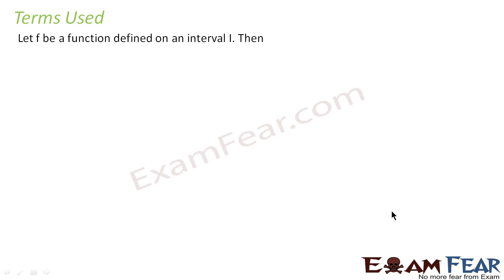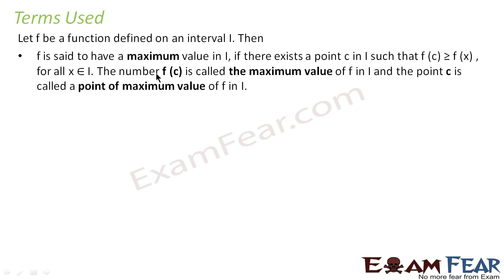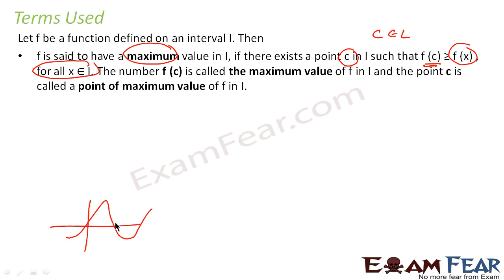Let's understand the terms used before we go to the topic. If f is a function on interval I, then f is said to have a maximum value if there exists a point c in I such that f(c) is greater than or equal to f(x) for all x in I. Then f(c) is called the maximum value and c is called the point of maximum value. For example, on a graph, c is the x-coordinate and f(c) is the highest point — f(c) is greater than any other f(x) on the graph.